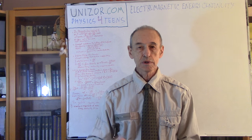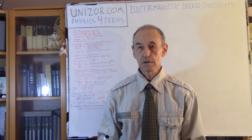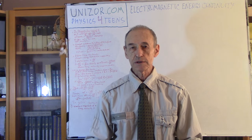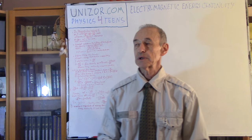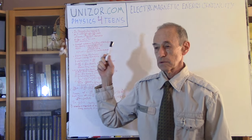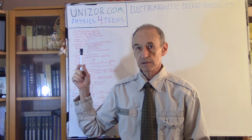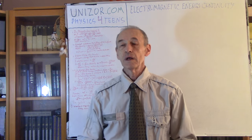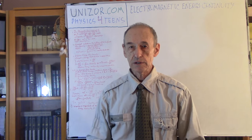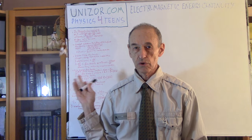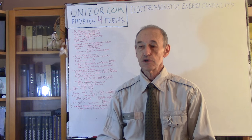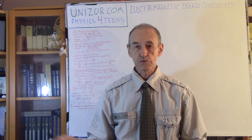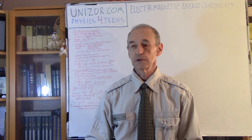Number one. Number two, the website is totally free. There are no advertisements. Sign-in is not really necessary unless you need functionality related to supervising something for somebody. There are other courses on the same website. First of all, there is a prerequisite mathematics course called Math for Teens. Certain things like calculus or vector algebra are mandatory to know to study physics. I suggest you to familiarize yourself with all these concepts from whatever source you want, including unizor.com.